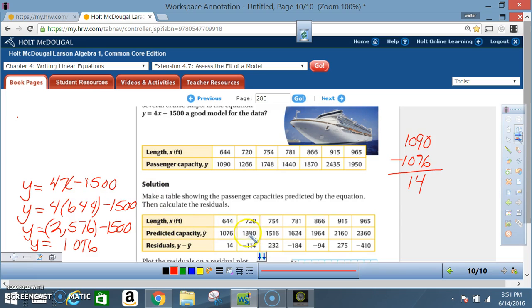The predictive value is based on the equation. To find the residual value, it's y minus predicted y. So that's 1090 from the table minus the value you just figured out, 1076, which is 14. That becomes your residual value. For negative 114, they ended up saying 1266 minus 1380. To get to 232, they had to say 1748 minus 1516, and it continues on like that.